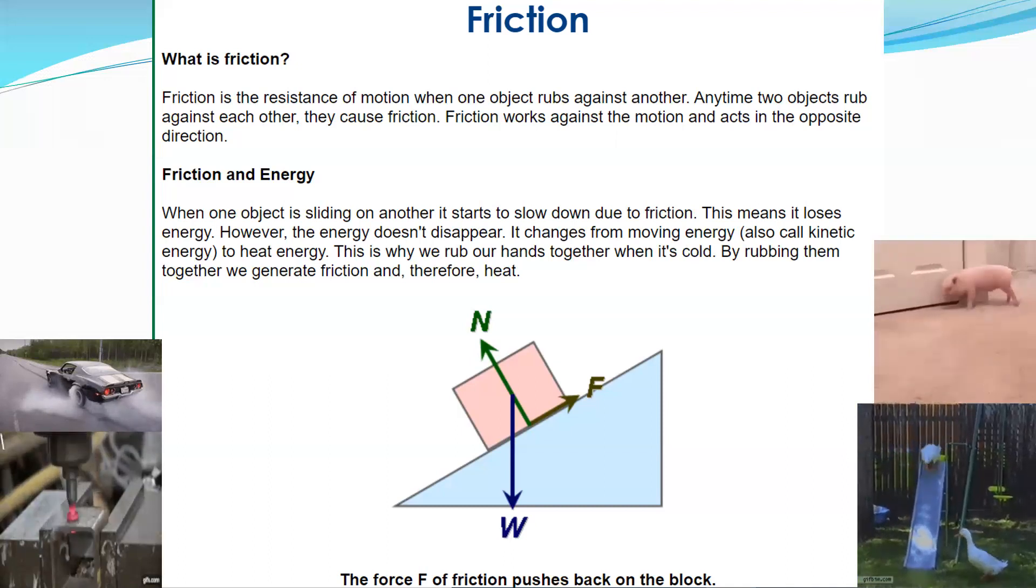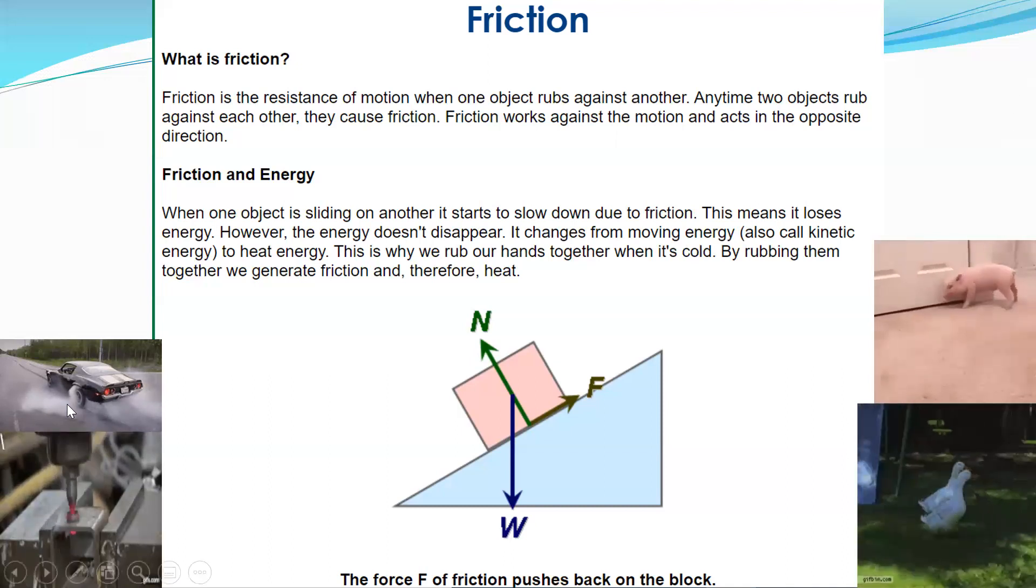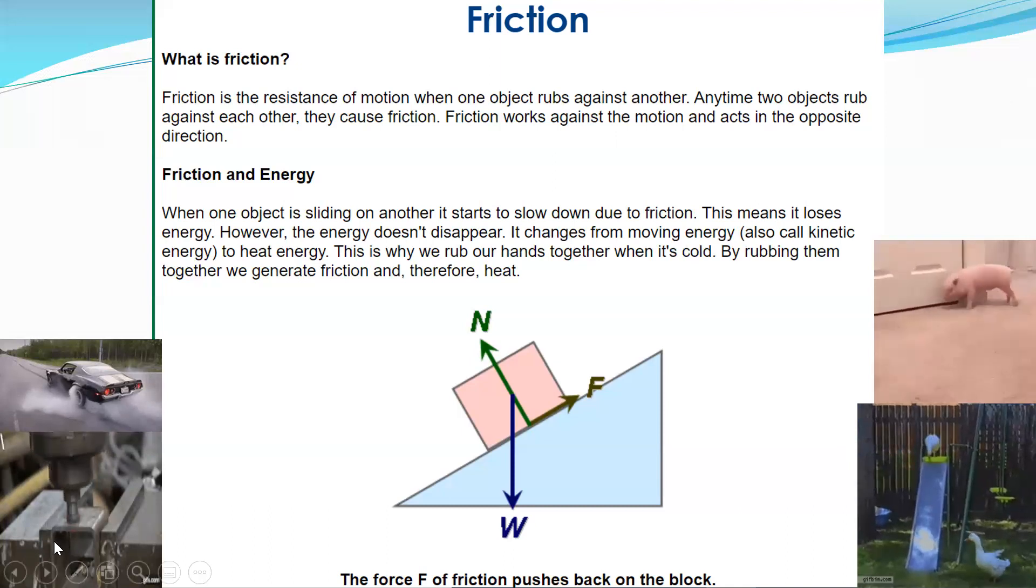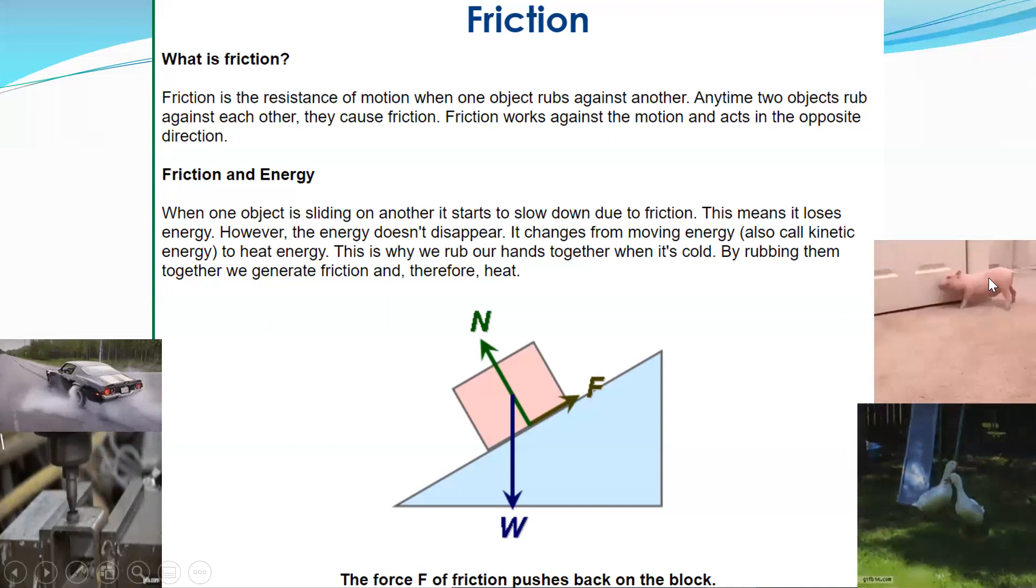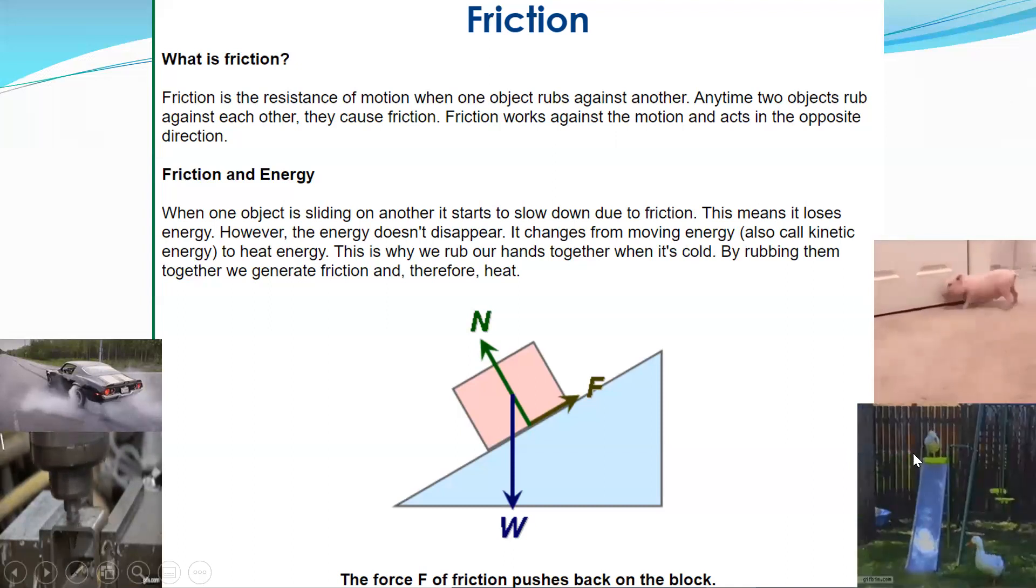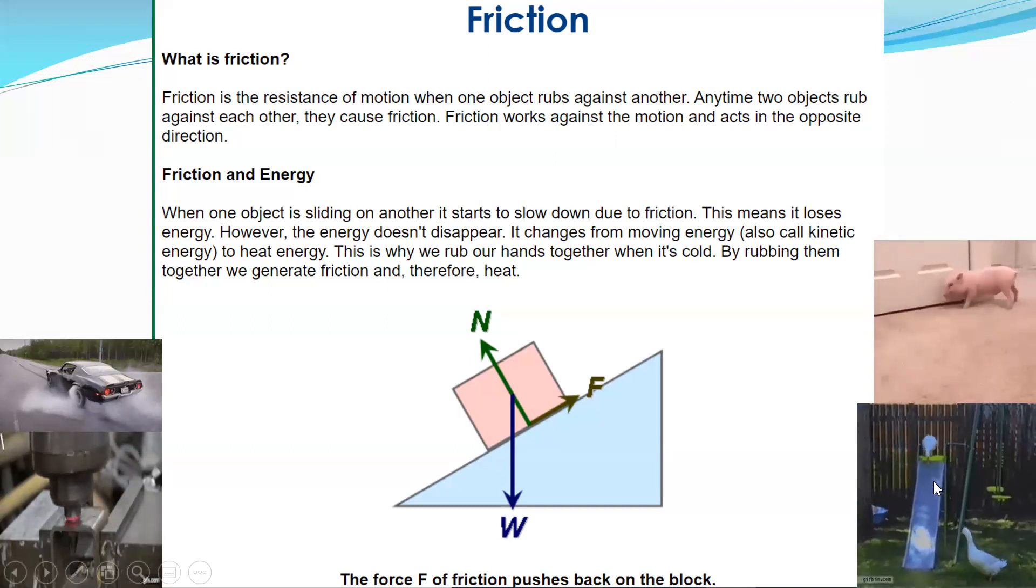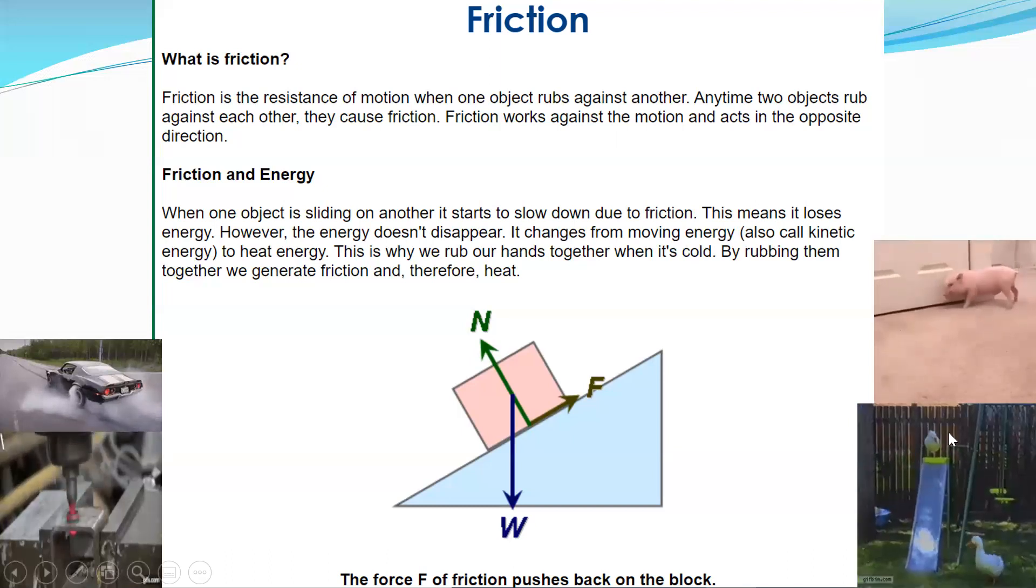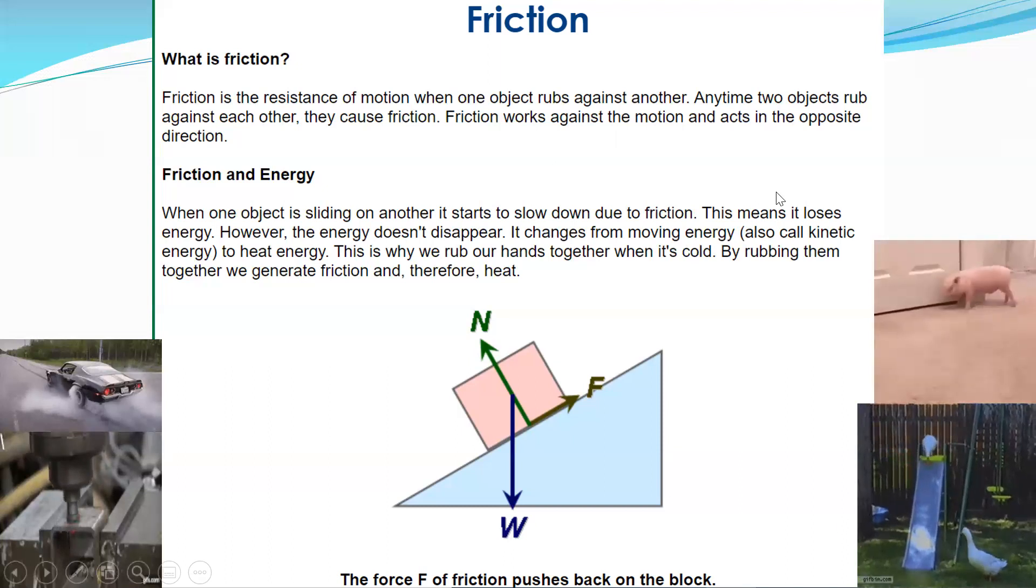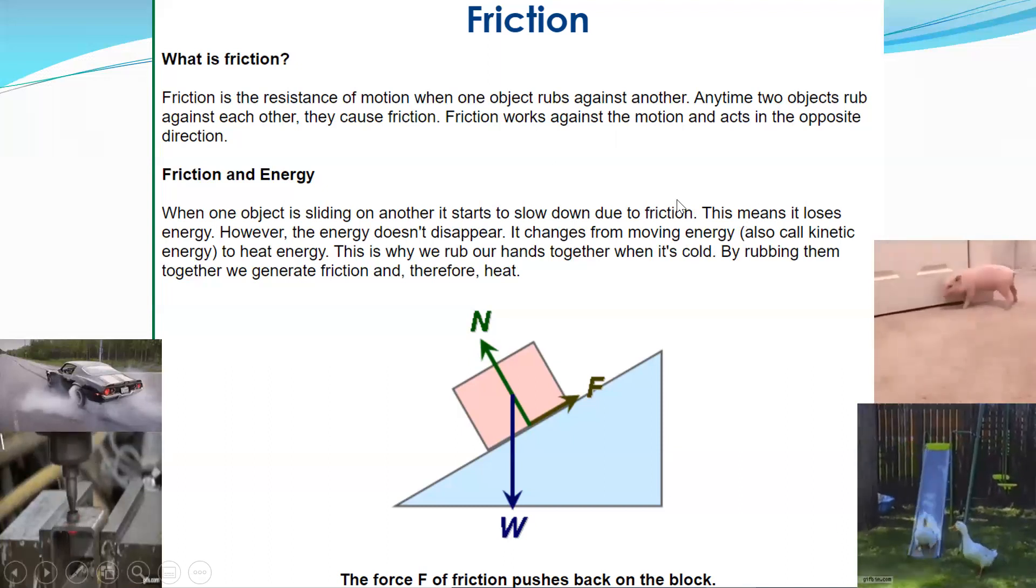Then these are examples of friction. We got the car burning out. We got the drill making the hole. We got the little piggy rubbing up against the wall. And then we have the geese or the duck sliding down the slide. Now, the slide doesn't have much friction. That's why the duck is able to slide down so smoothly. Look at it go.